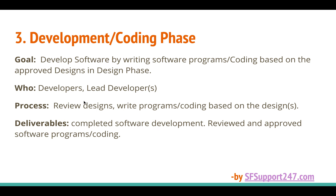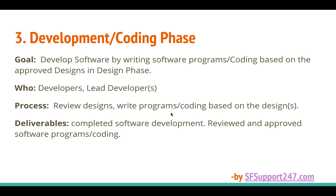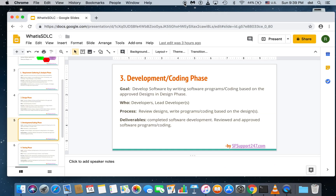The deliverables are completed software development with some unit testing — it is always good practice for a developer to test their code to eliminate bugs. It is also better to have code reviews set up with peer developers or the lead developer. There will be a lot of standards when writing programs, such as how to name classes, how to write comments, so that the code is easier to maintain. This is the development or coding or implementation phase at a high level. Thank you, see you in the next video.